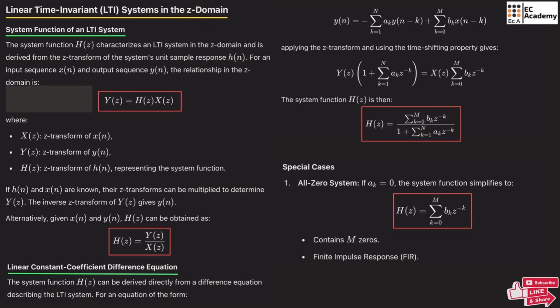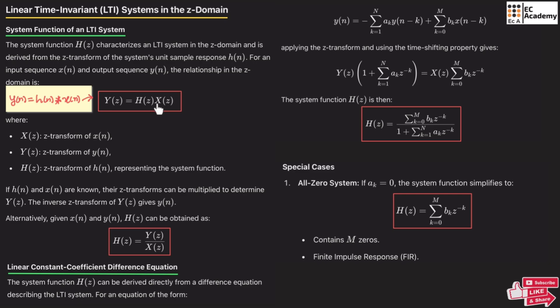The Z domain is nothing but the frequency domain. We know that the output of an LTI system can be given as y(n) = h(n) convolved with x(n). In the frequency domain, we can write this as Y(z) = H(z)·X(z). This is the time domain representation, where convolution in time domain becomes multiplication in frequency domain. This is the Z domain representation, where Y(z) is the Z transform of y(n), H(z) is the Z transform of h(n), and X(z) is the Z transform of x(n).